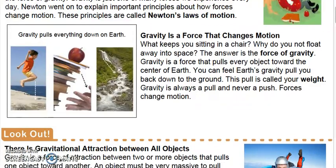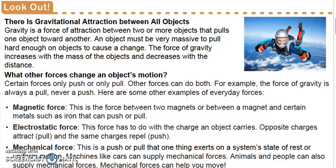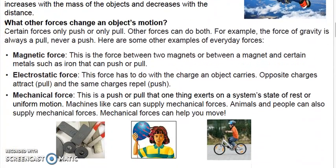Forces change motion. There's a gravitational attraction between all objects. Gravity is a force of attraction between two or more objects that pulls one object toward another. An object must be very massive to pull hard enough on objects to cause a change. The force of gravity increases with the mass of the objects and decreases with the distance. Certain forces only push or only pull, while other forces can do both. For example, the force of gravity is always a pull and never a push.